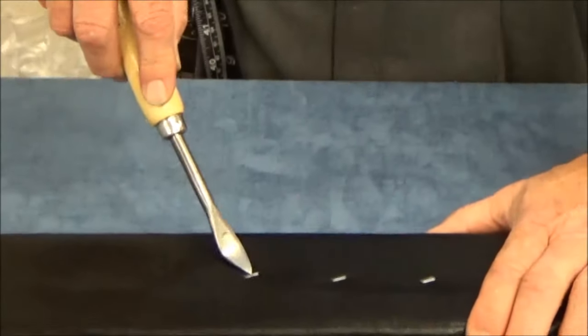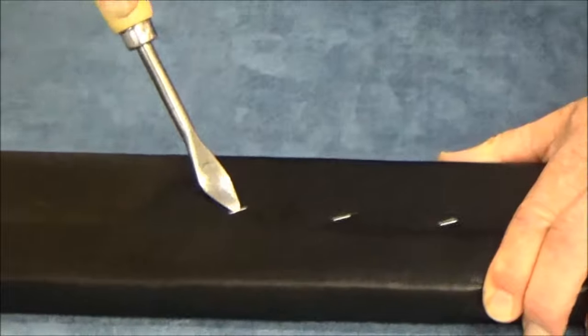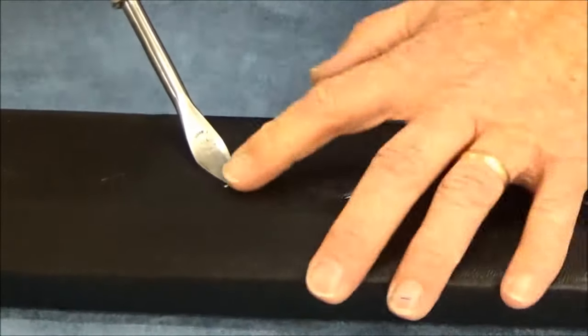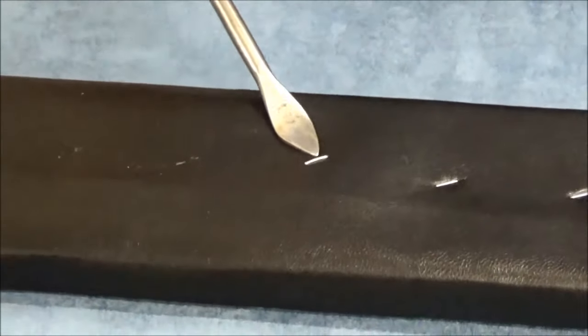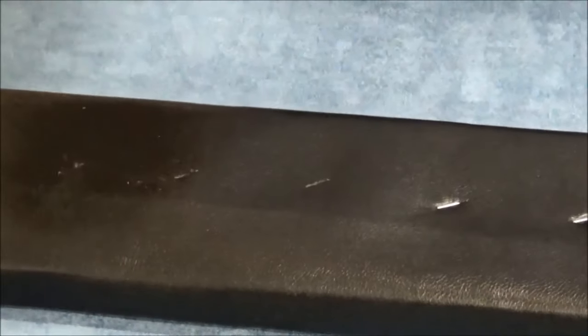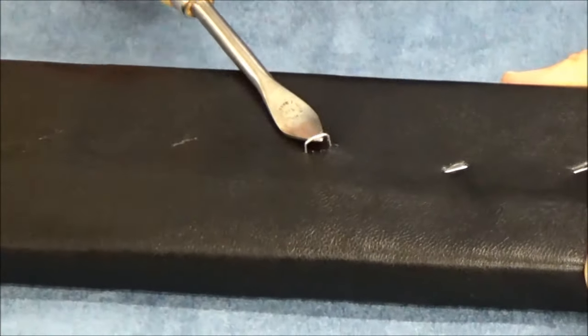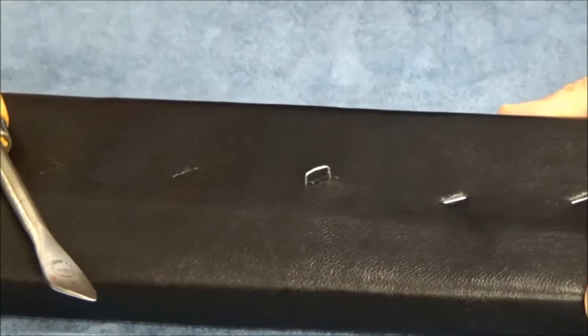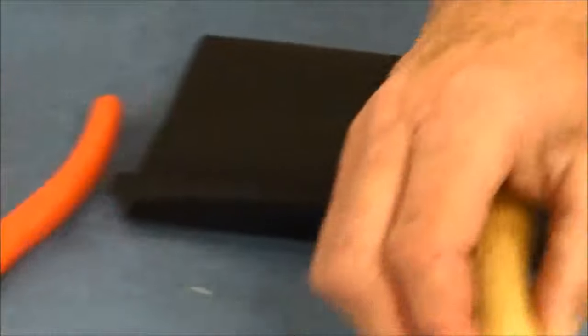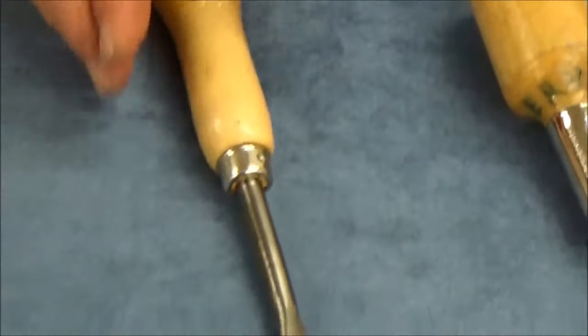So it works basically the same way. You want to find your staple, and usually you go right in the middle with the spoonbill and you just rock it. Generally you can rock it completely out. If it doesn't come completely out then you can always go back with the wire cutters and twist it out.